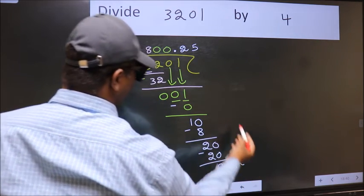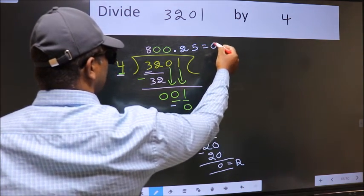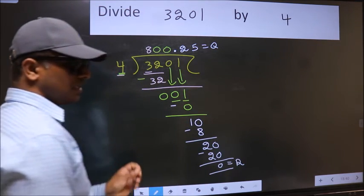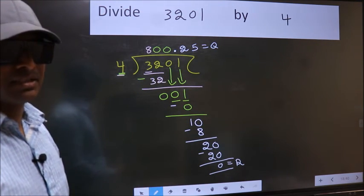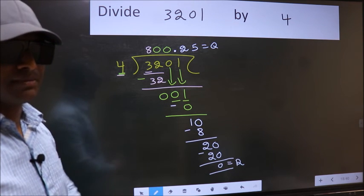This is our remainder and this is our quotient. Did you understand where the mistake happens? You should not do that mistake.